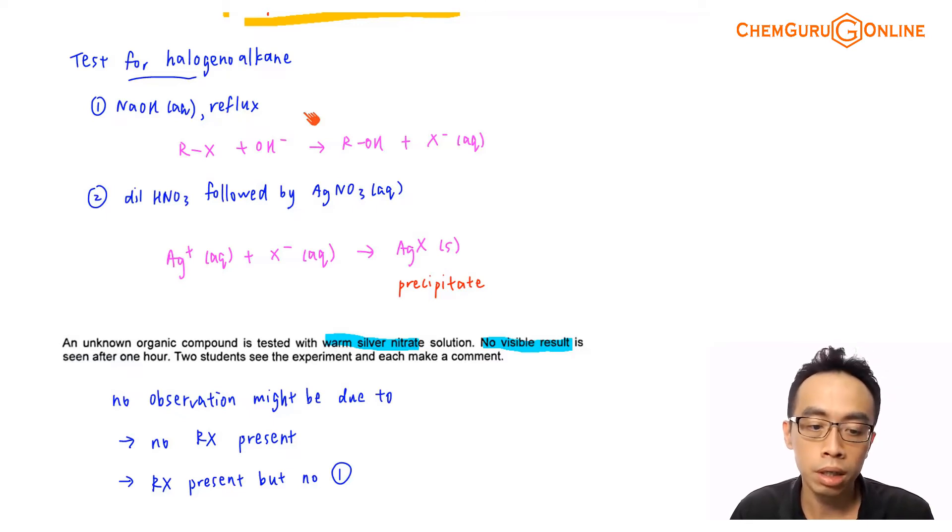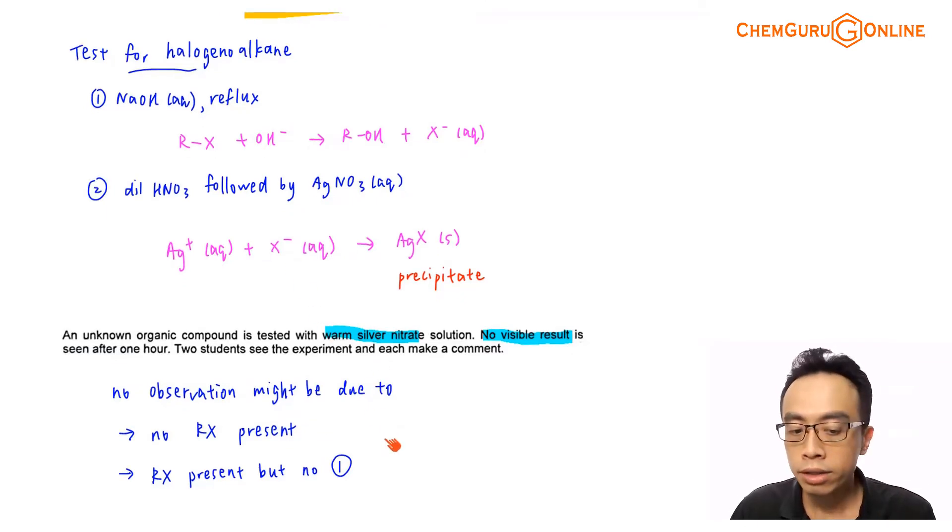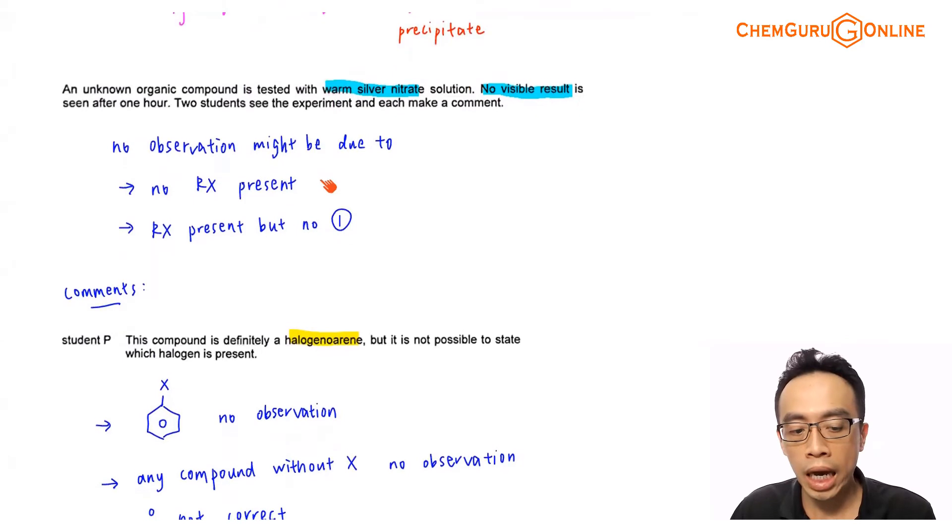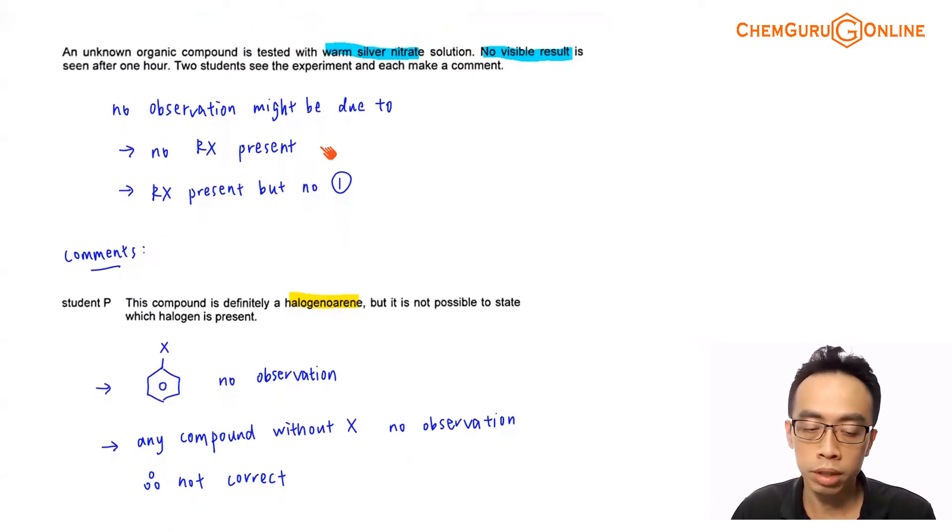Now the other possibility is the more straightforward one, there's no halogenoalkane present. This is of course a lot more straightforward. And based on these two possible deductions, let us take a look at the comments by Student P and see whether this is reasonable or not.